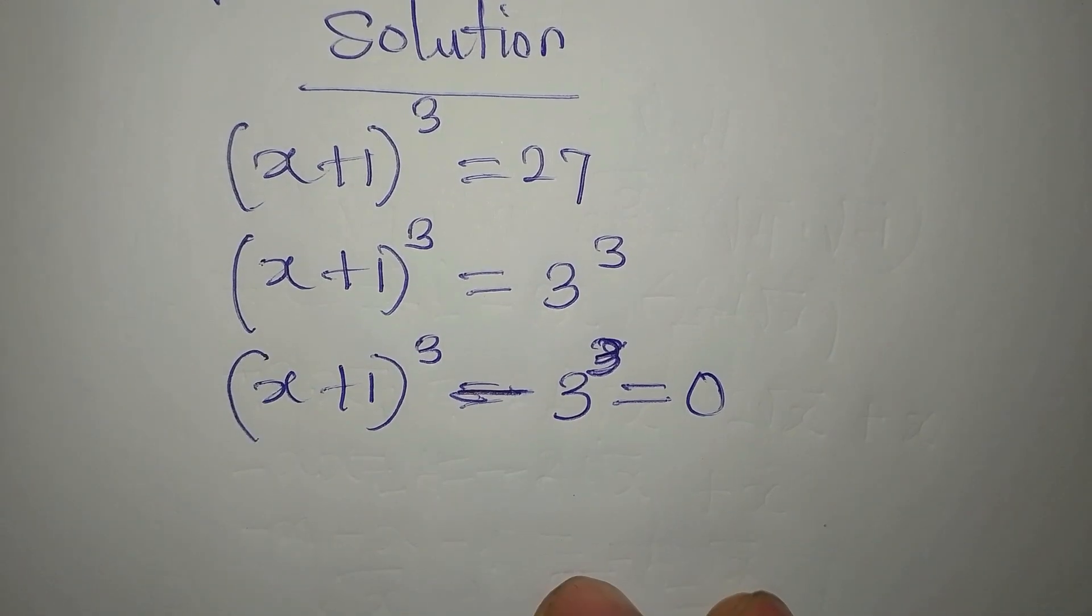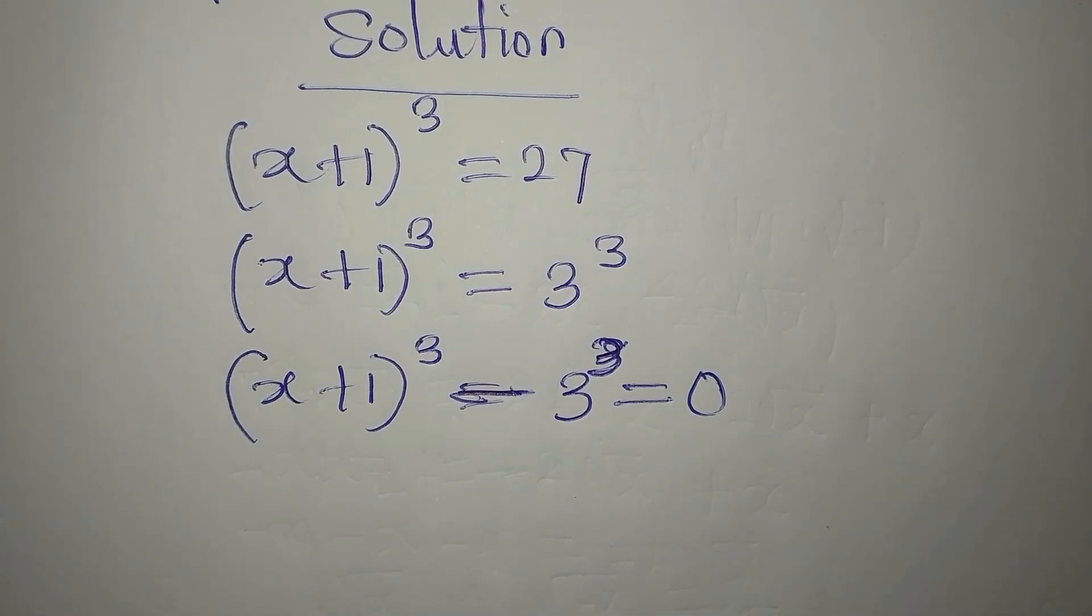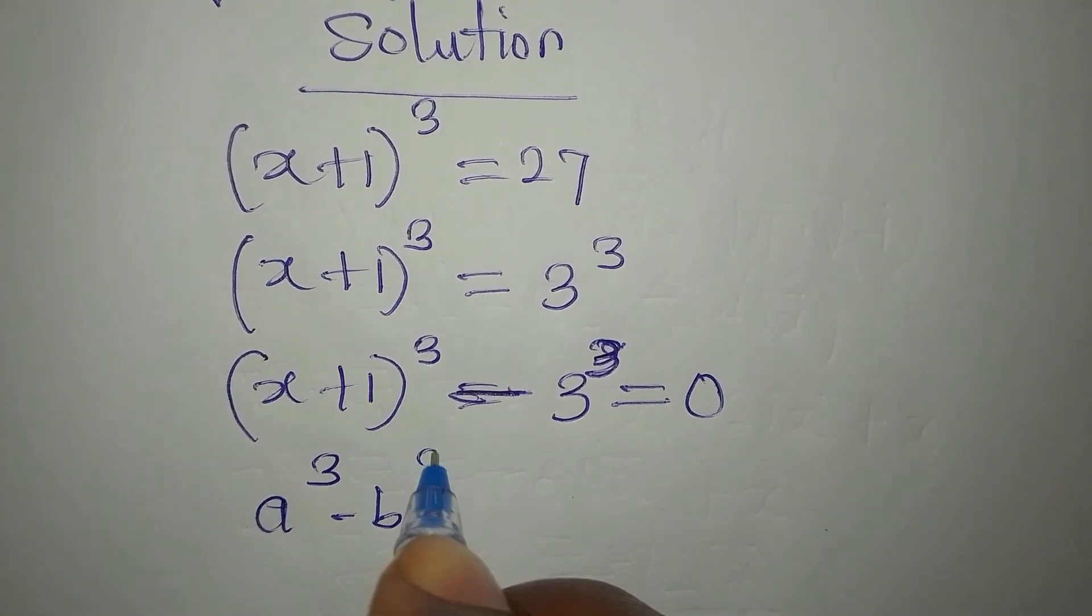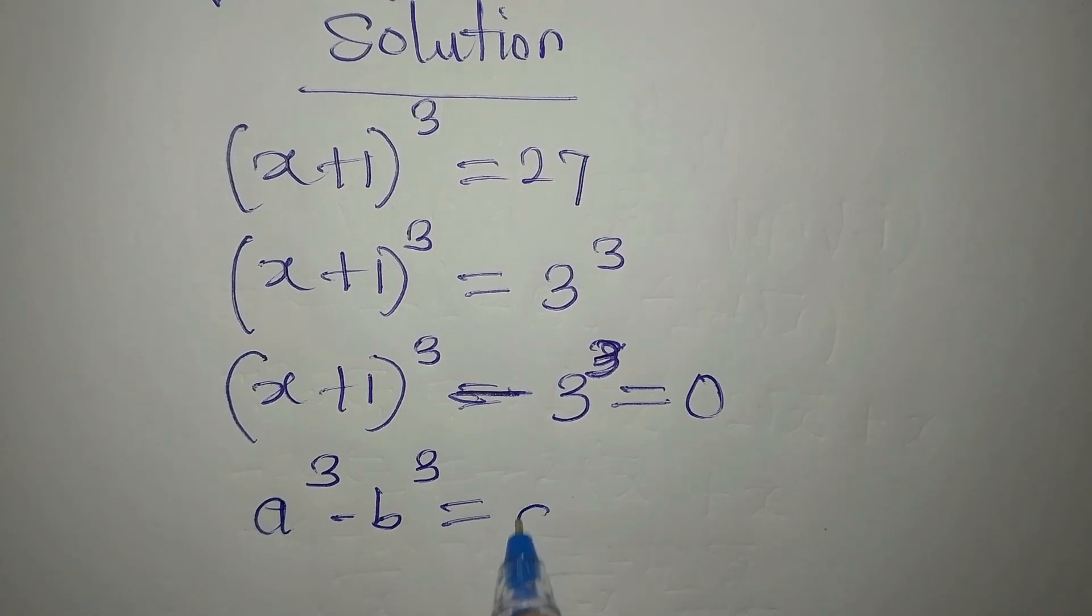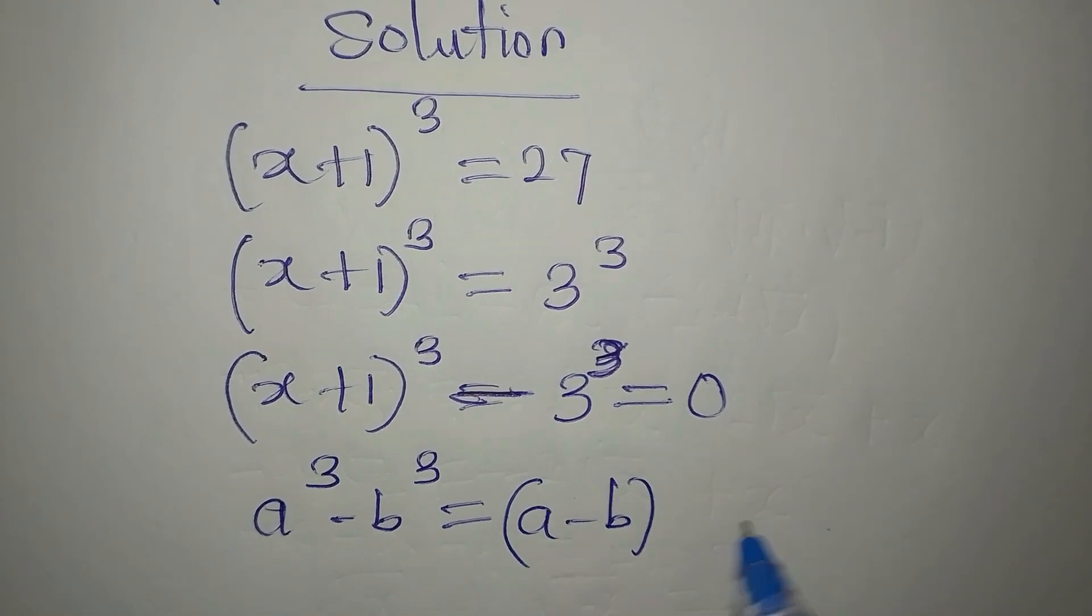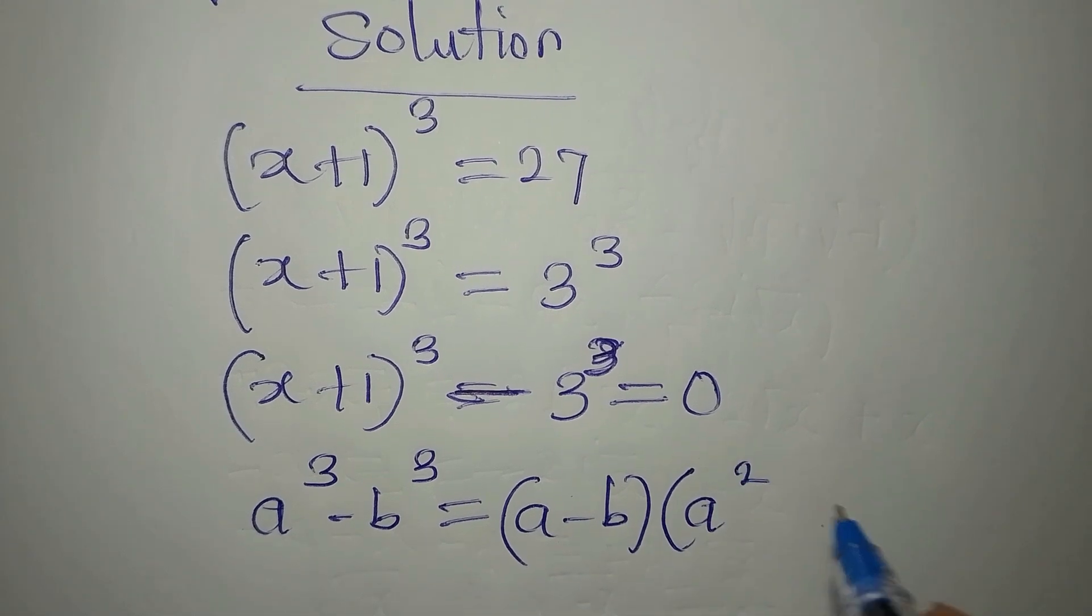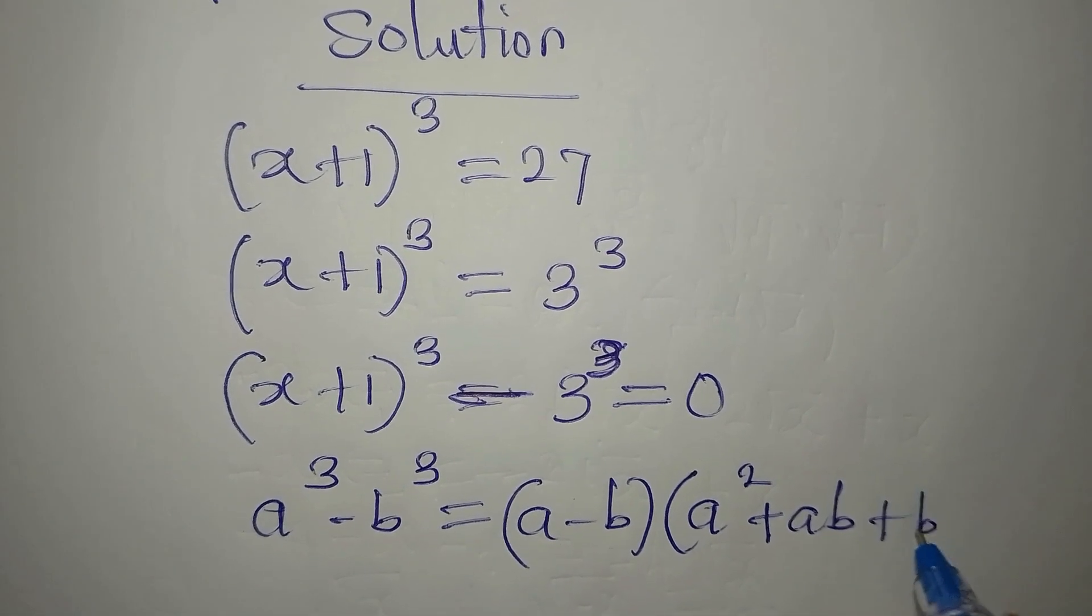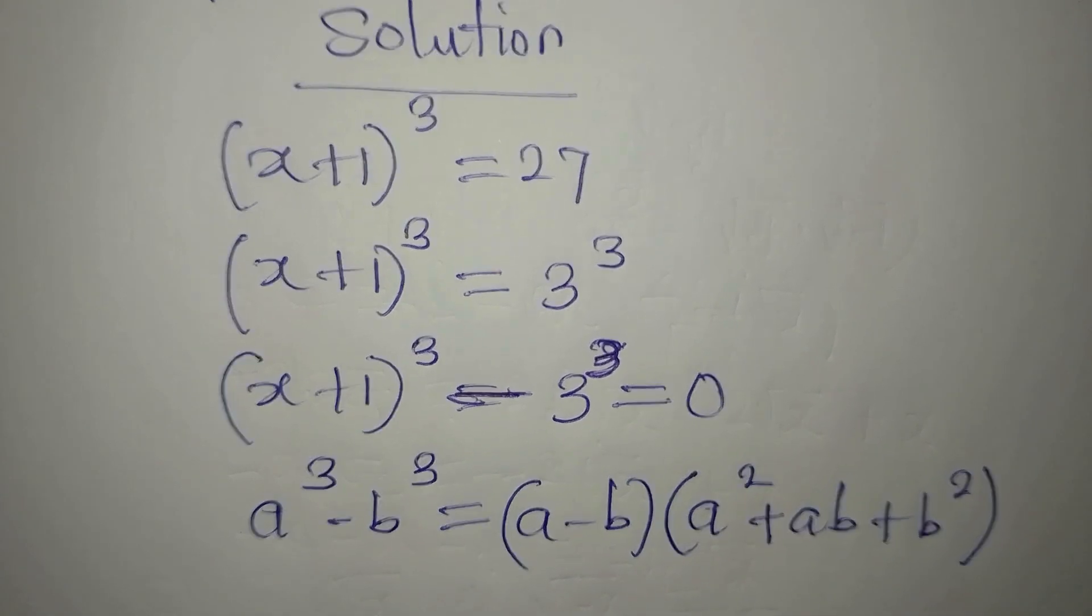Now the next thing I'm going to do is to use difference of two cubes. If you have a to the power of 3 minus b to the power of 3, this is the same thing as a minus b times bracket a squared plus ab plus b squared.